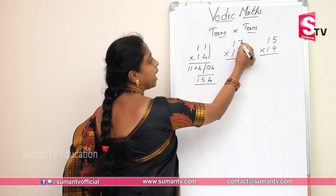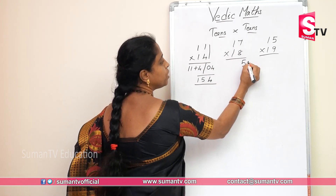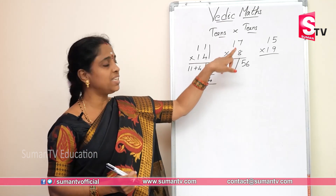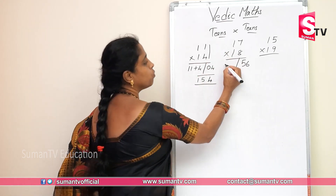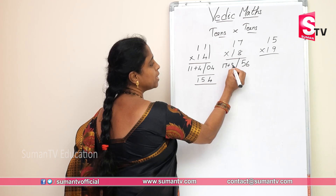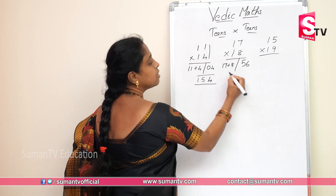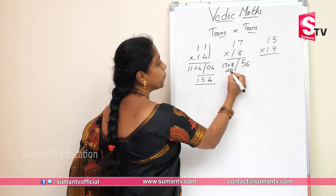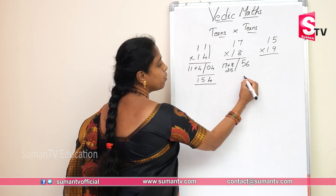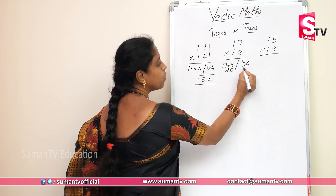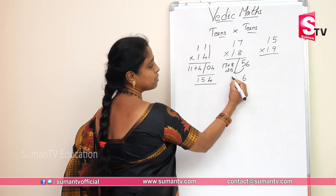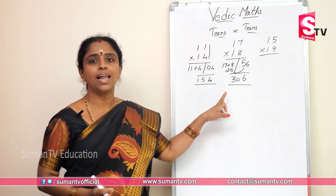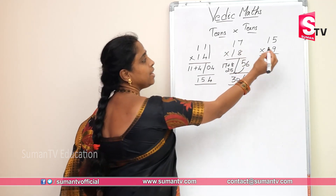Here 8 sevens are 56. We are going to 17 plus 8. 17 plus 8 is 25. Write 6 here and carry over this 5 here. 25 plus 5 is 30. We are doing the balancing rule here.